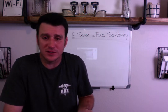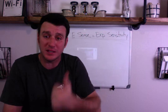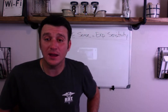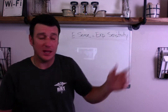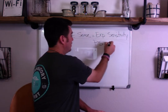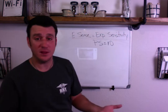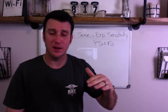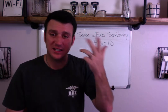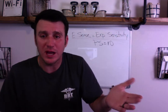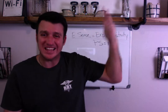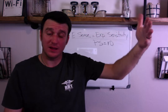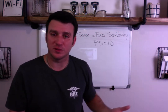During pressure support breaths, the vent senses the patient wants to breathe spontaneously and helps. Let's say we have a pressure support of 10 and a PEEP of 5. When the patient breathes spontaneously, the vent raises the pressure by 10 — so it goes from 5 to 15. That's how pressure support works: it increases the pressure during that inspiratory phase.